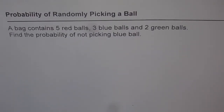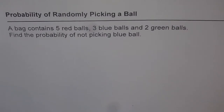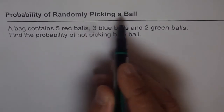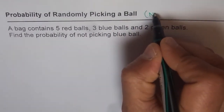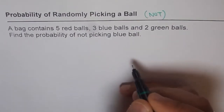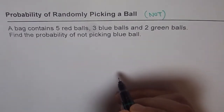Probability of randomly picking a ball. The question here is: a bag contains five red balls, three blue balls and two green balls. Find the probability of not picking a blue ball. So it is basically not just picking a blue ball — it is in fact not picking a blue ball. That is the question for us.